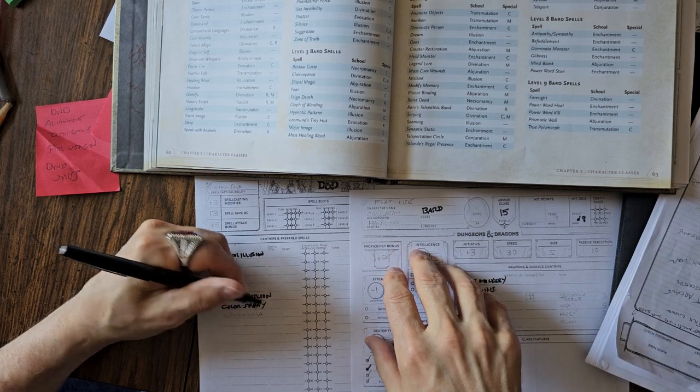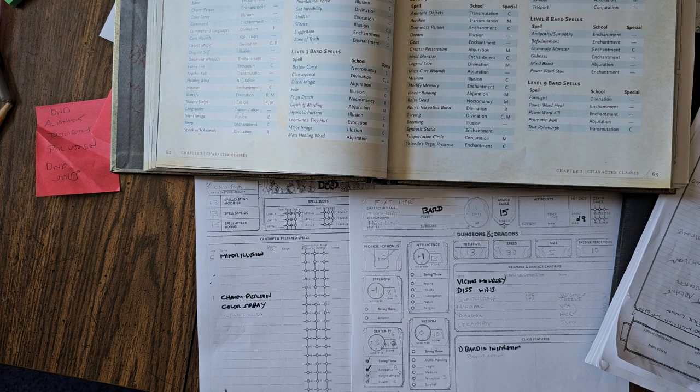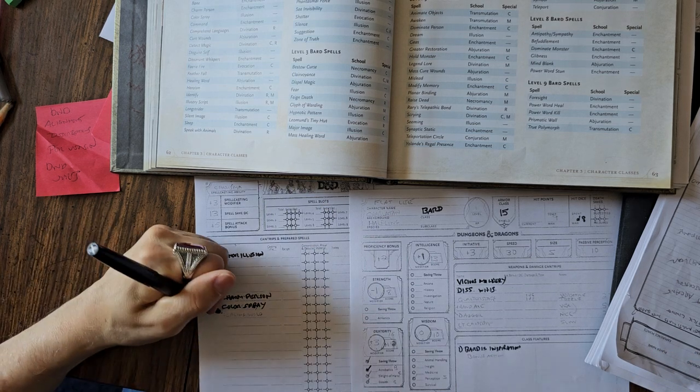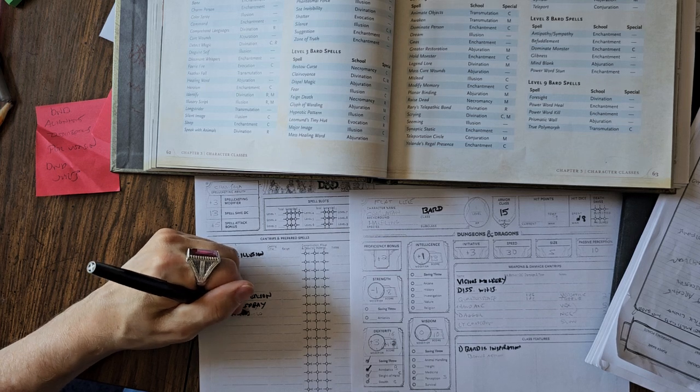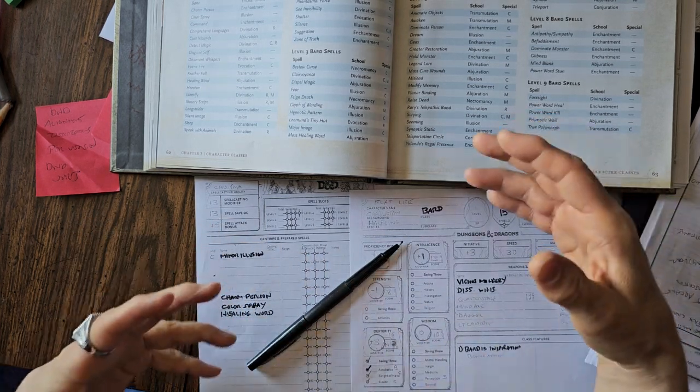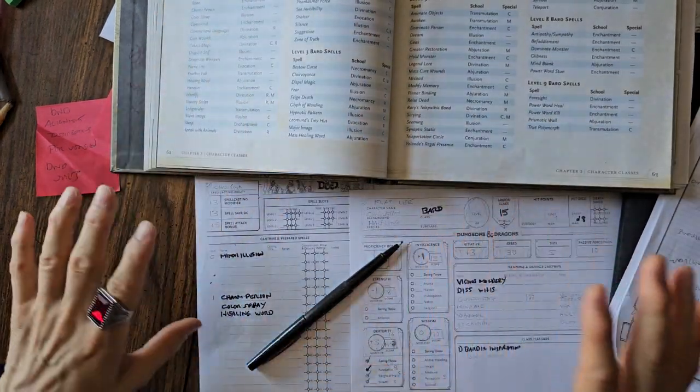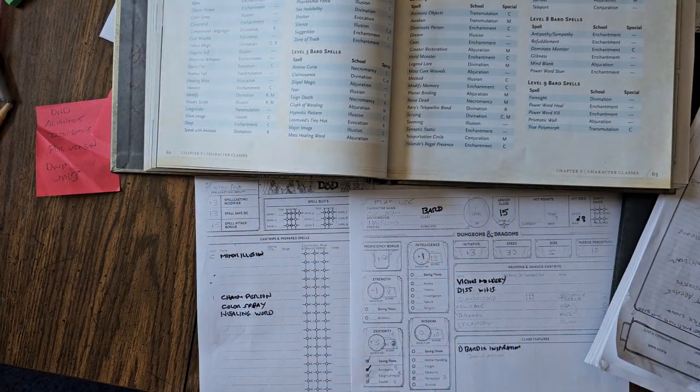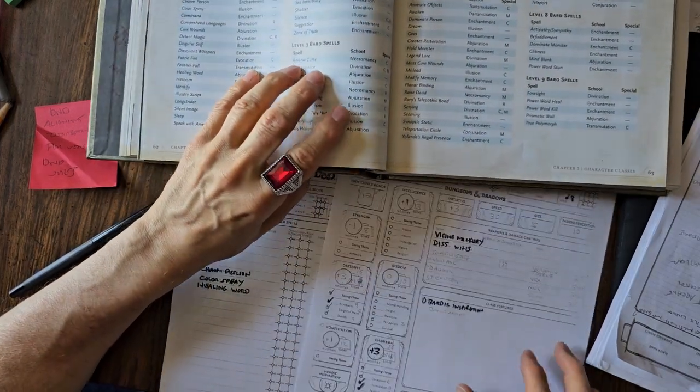I did Color Spray because that was recommended by the book. Again, that could be in addition to your dance, like a light show. And I also picked Healing Word. Healing Word I picked because it's extremely useful. You can cast Healing Word as a bonus action and you can heal somebody else in your party without even being close to them, just in line of sight. That's a big deal.